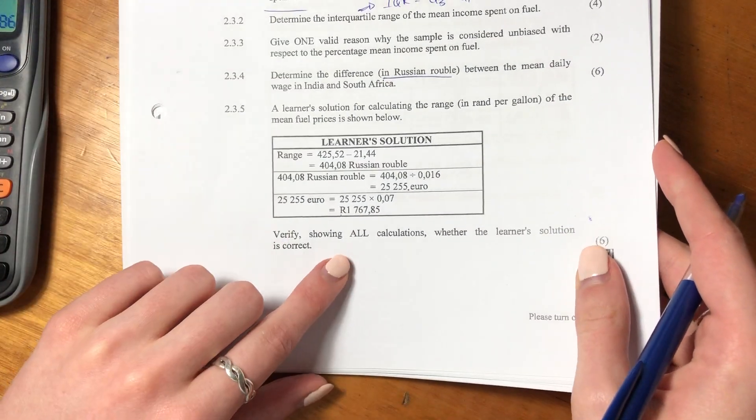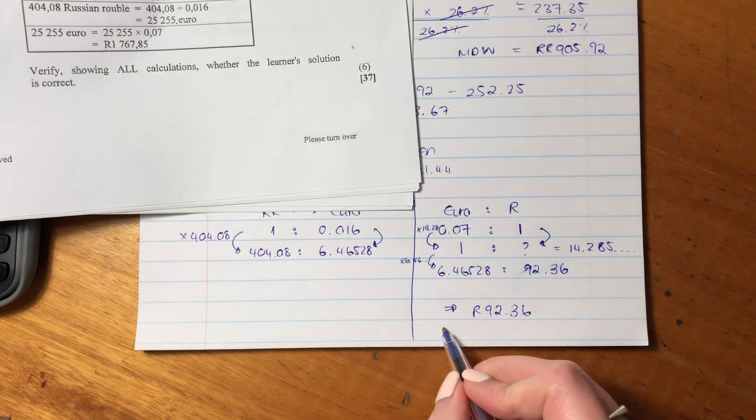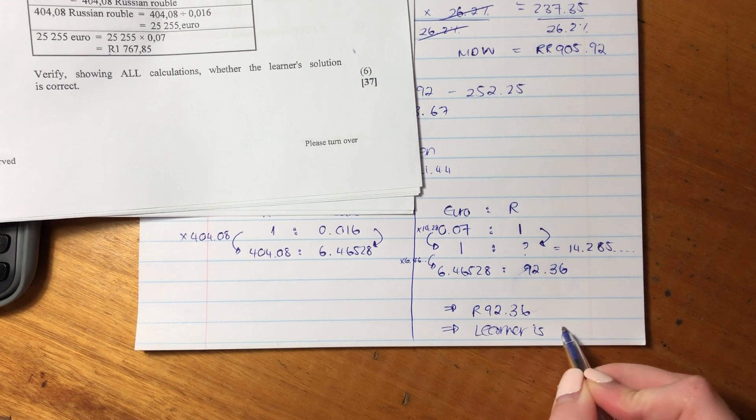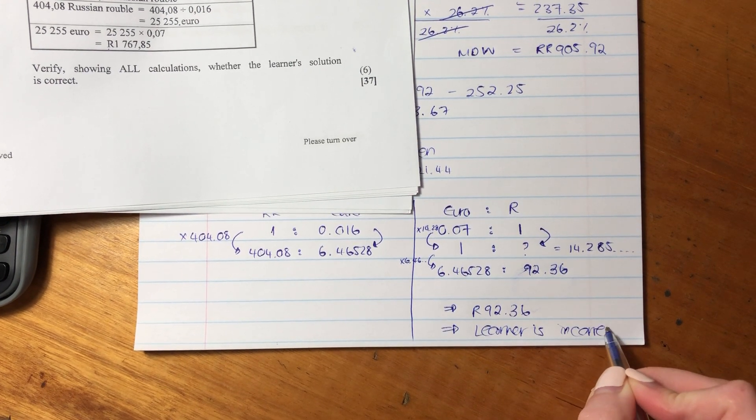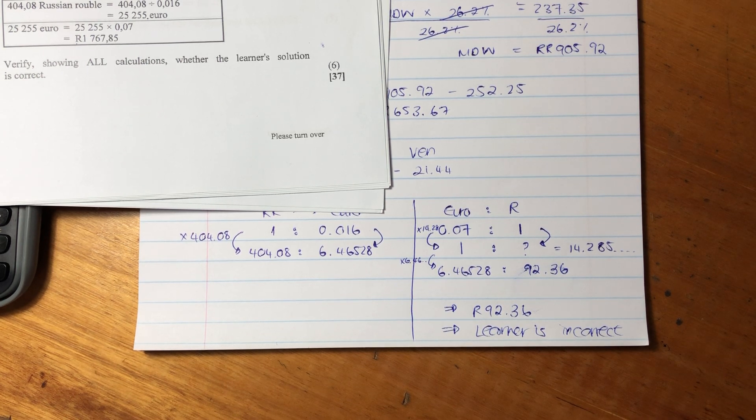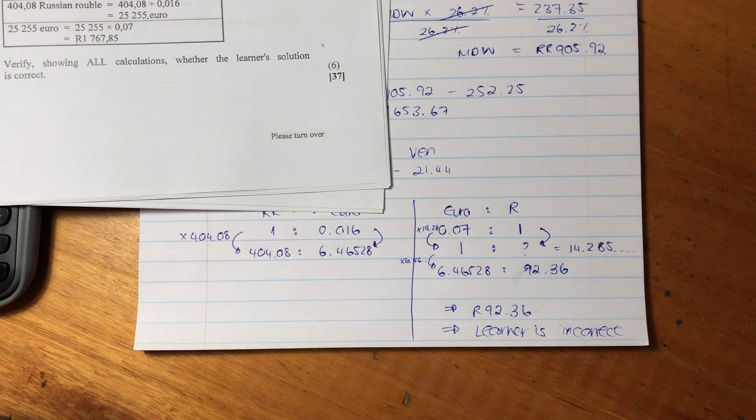But this student said it was this massive number over here. So we say no, learner is incorrect. So remember, once you do the maths, always state whether the scenario that's given or the person that's given a specific solution, whether it is correct or incorrect. So that's the end of this question. Yes, a very tricky question, but a really good question to practice. Let's now move on to question three.